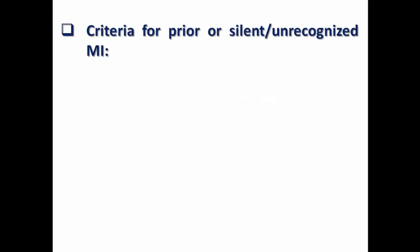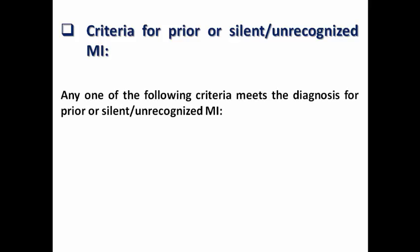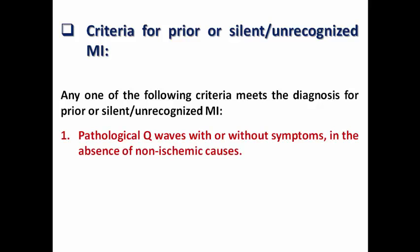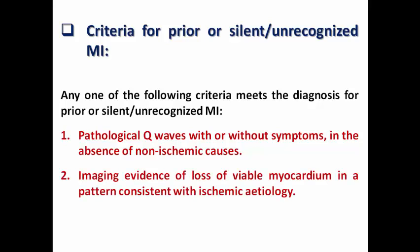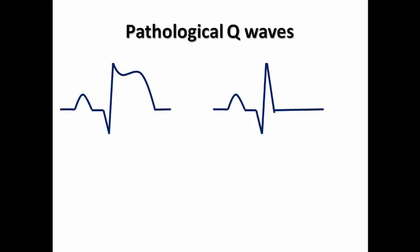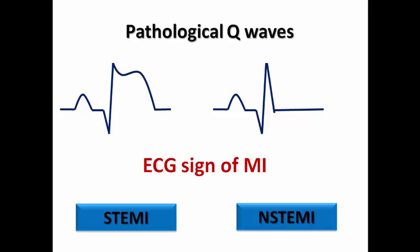In the universal definition, there are clear criteria for prior or silent unrecognized MI. Any one of the following suffices: pathological Q-waves with or without symptoms in the absence of non-ischemic causes, imaging evidence of loss of viable myocardium in a pattern consistent with ischemic etiology, or pathological findings of prior MI. Pathological Q-waves can occur in both STEMI and non-STEMI as a sign of infarction, and may also occur in other diseases apart from MI.